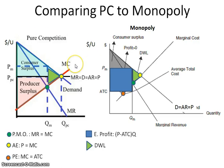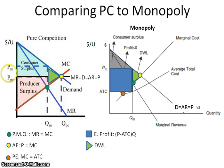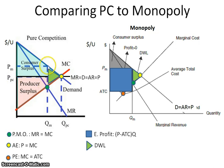One last thing to look at: the perfectly competitive firm will produce a larger quantity than the monopoly, and the perfectly competitive firm will also charge a lower price than the monopoly. We can see this graphically — that intersection of MR equals MC for the perfectly competitive, which is also your price, is much lower than where you have MR equals MC up to the demand curve in order to figure out your price for the monopoly.